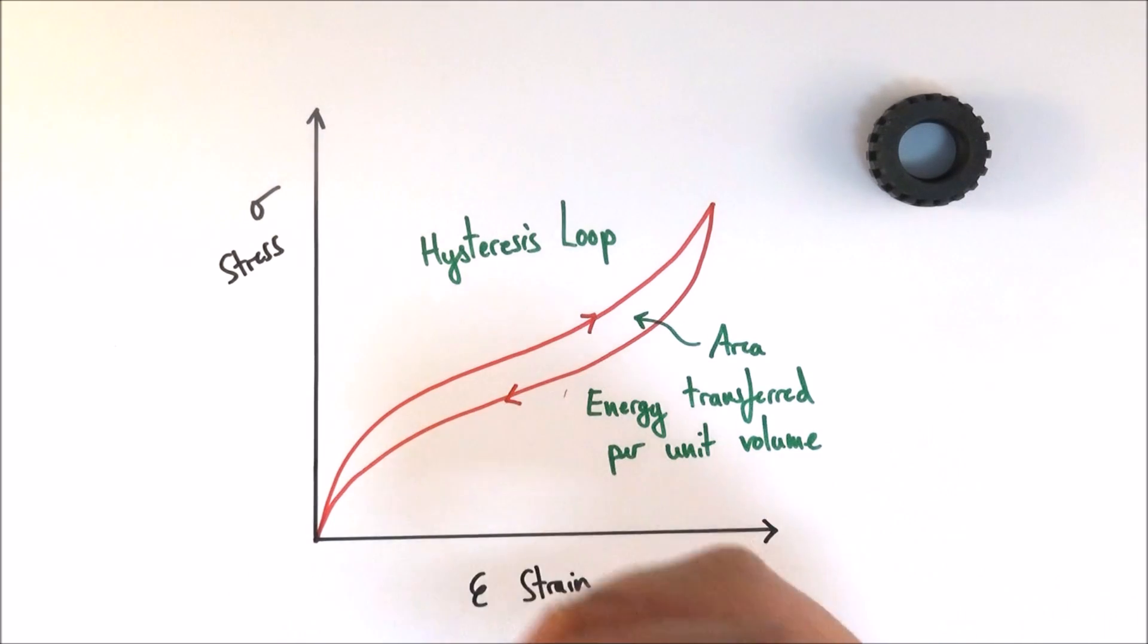So this is a bit about rubber and how that behaves and how different that is to the way that metals behave, that things that obey Hooke's law when they're actually stretched and compressed. Thank you.